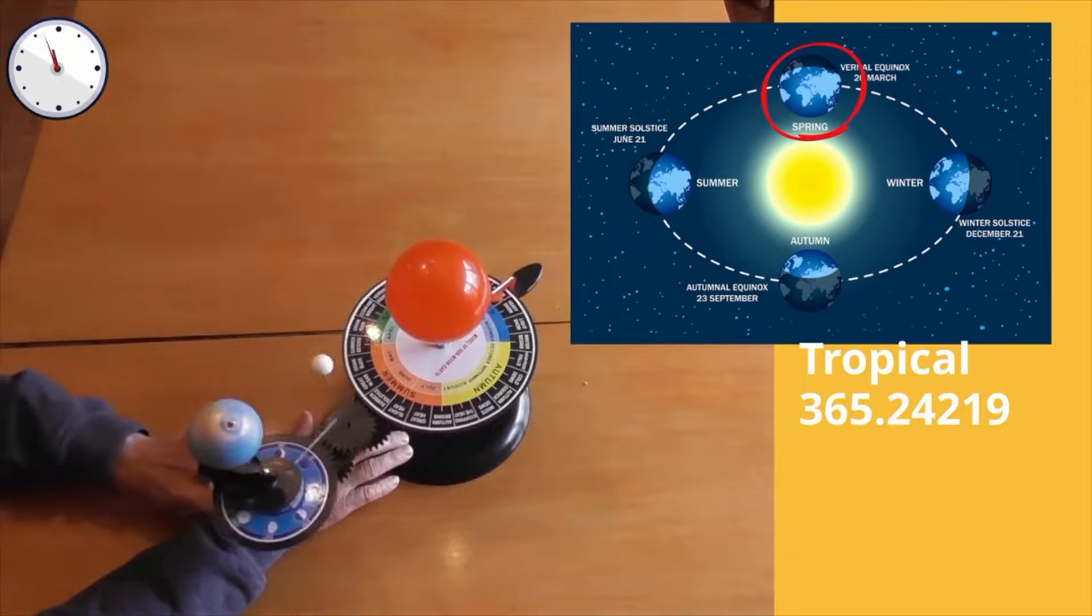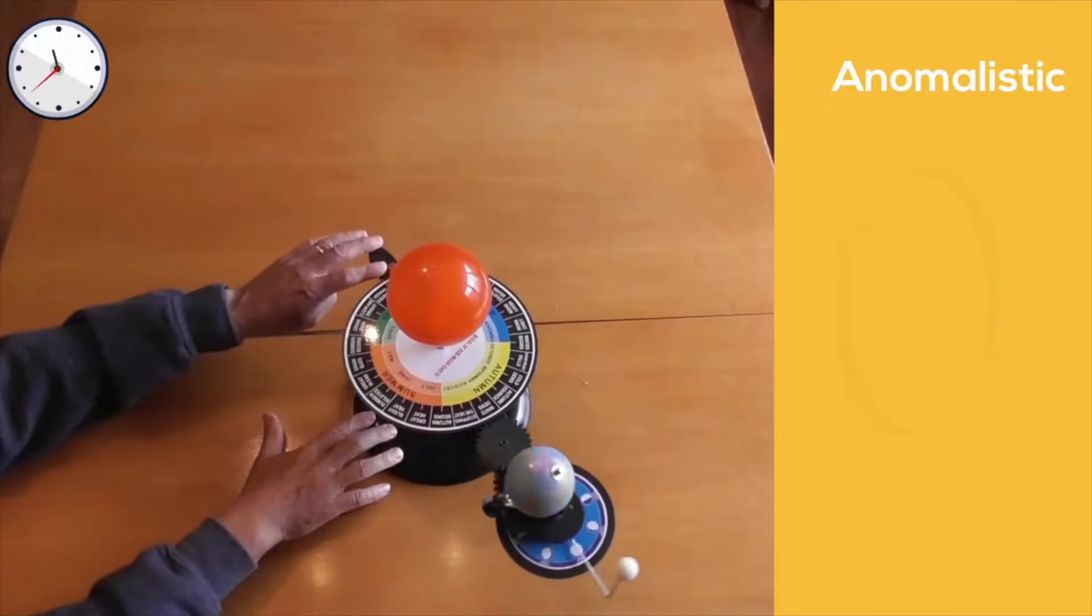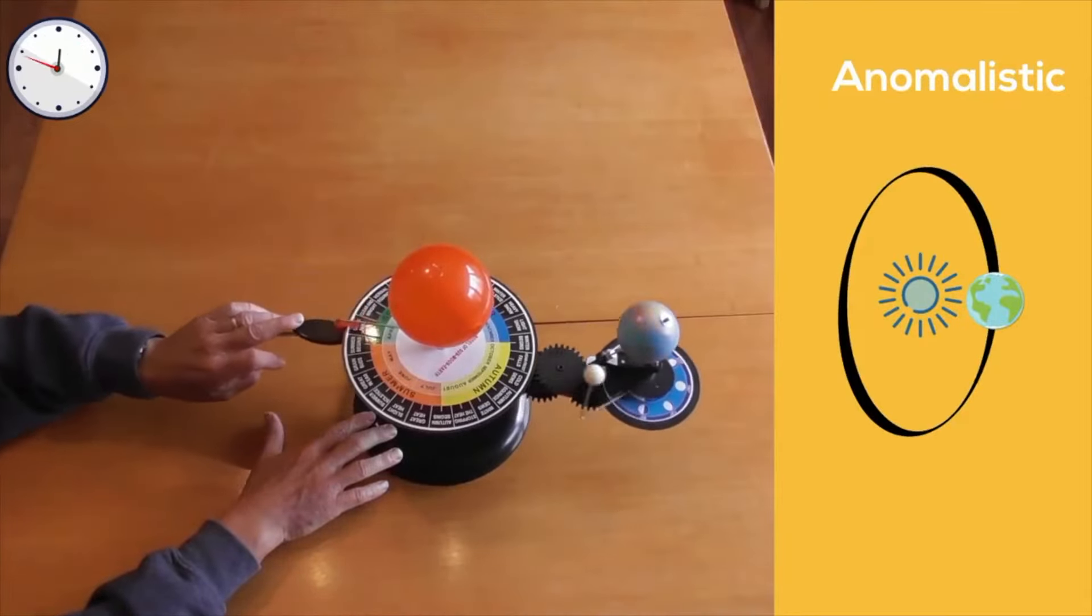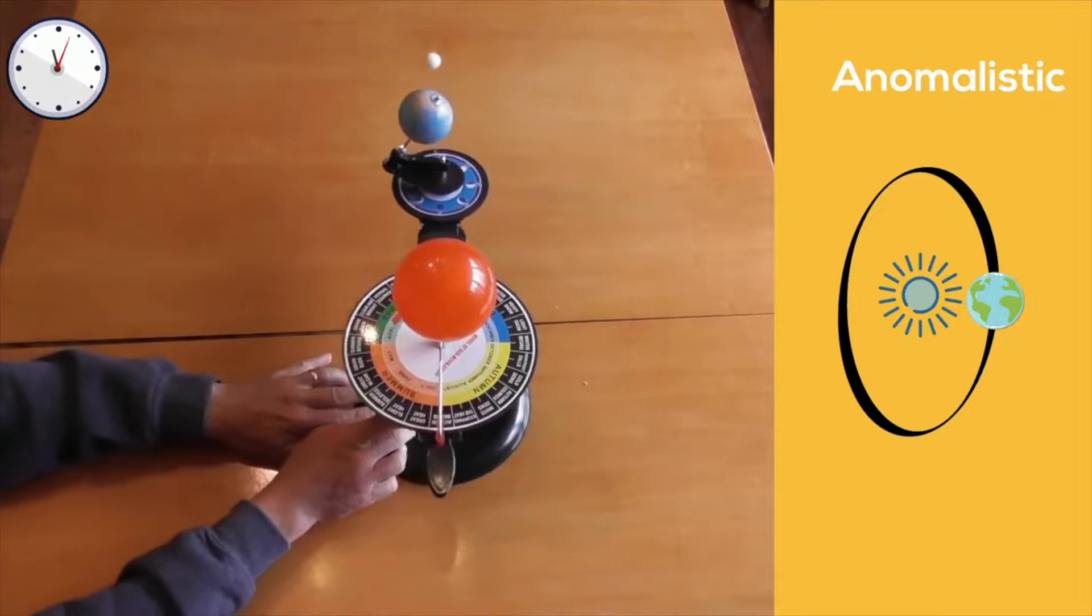Another method is the anomalistic year, which is 365.2596 days, and it is the time from one perihelion to the next perihelion. The perihelion is the point of the orbit of the Earth in which it is closest to the Sun.